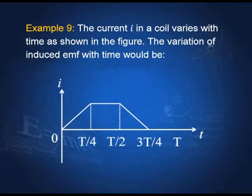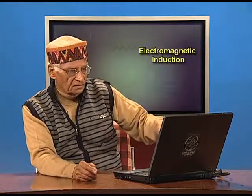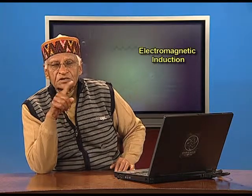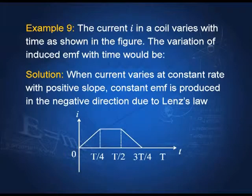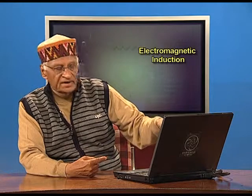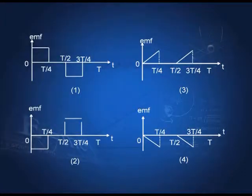Example 9: the current I in a coil varies with time as shown — it increases, becomes constant, then decreases. We must find how the induced EMF varies with time. Remember, ε = −dΦ/dt. If dΦ/dt = 0 (flux is steady), then ε = 0. Since current is increasing, the magnetic field and therefore the flux are increasing, so there will be an induced EMF. Out of the four options, we need to identify the correct EMF profile.